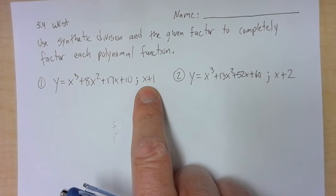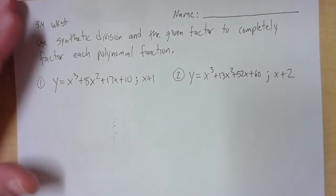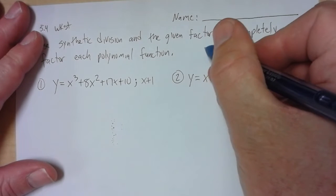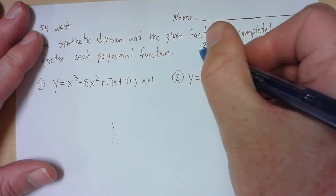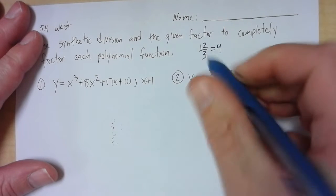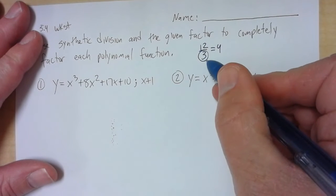So what does it mean to be a factor? Well, if something's a factor, it divides evenly. So if I take 12 and I divide it by 3, I get 4. So we say 3 is a factor of 12.